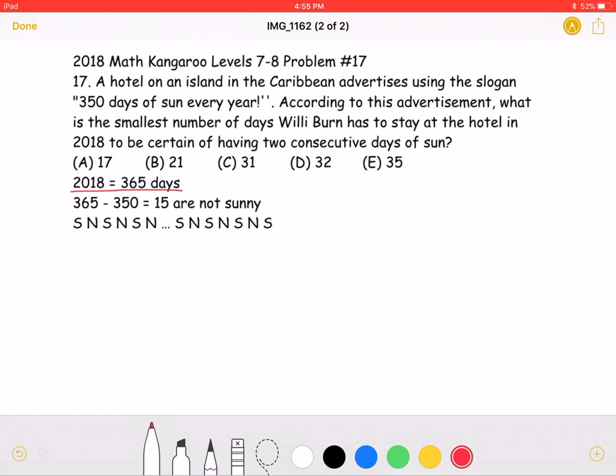This advertisement says that this island has a total of 350 days of sun. Now, if we take the total number of days, 365, and subtract 350, we can see that there are a total of 15 days each year that are not sunny.